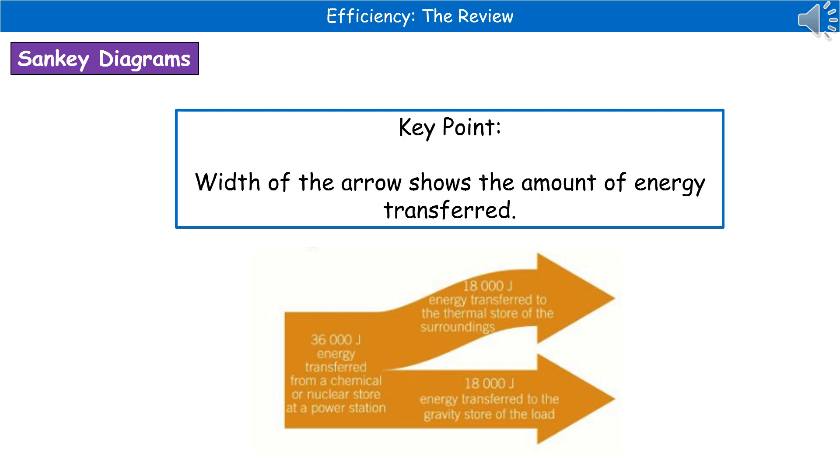One way we can represent these energy transfers is through a Sankey diagram, which hopefully you encountered at key stage 3. The key thing to remember is that the width of the arrow shows the amount of energy transferred. If they ask you to draw one of these Sankey diagrams, they would give you pre-printed graph paper so you can pick a scale easily. Make sure the width of your arrows is representative of the energy transferred.